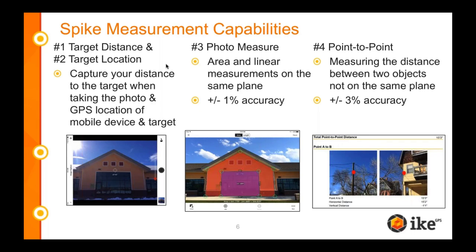Then the fourth one is point-to-point, which allows you to measure the distance between two objects that are not on the same plane. So what if you need to know how far a light pole is to the side of the building, or a tree to the side of a house? You can quickly snap two photos and know the distance between those two points, with plus or minus 3% accuracy.